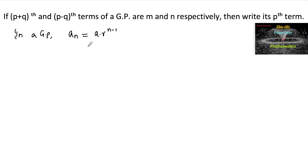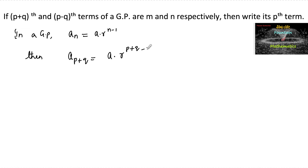Let a be the first term and r be the common ratio. Then the (p+q)-th term can be written as a_(p+q) = a · r^(p+q-1), and also the (p-q)-th term is a_(p-q) = a · r^(p-q-1).